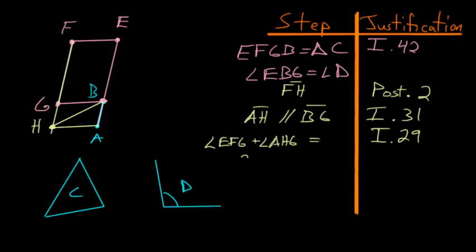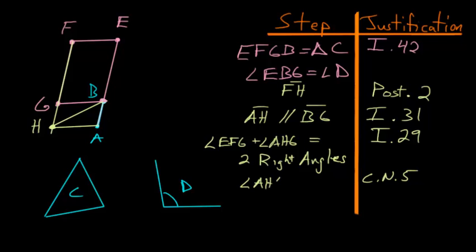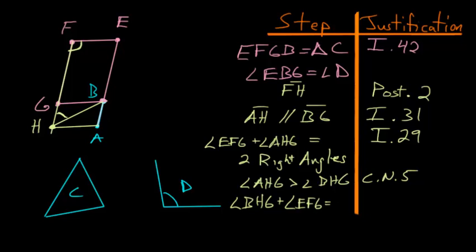So angle EFG plus angle AHG are equal to two right angles. Also notice that angle BHG is just a part of the bigger angle AHG, so by Common Notion 5 — the whole is bigger than the part — angle AHG is bigger than angle BHG. Since AHG is bigger than BHG, angle BHG plus angle EFG add up to less than two right angles.